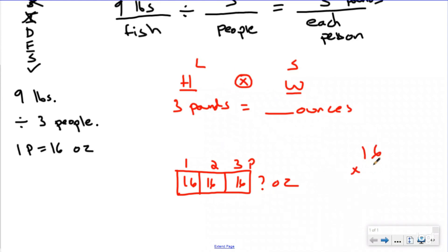When you do 16 times three, you're going to have 18, regroup. And each person got 48 ounces of fish.